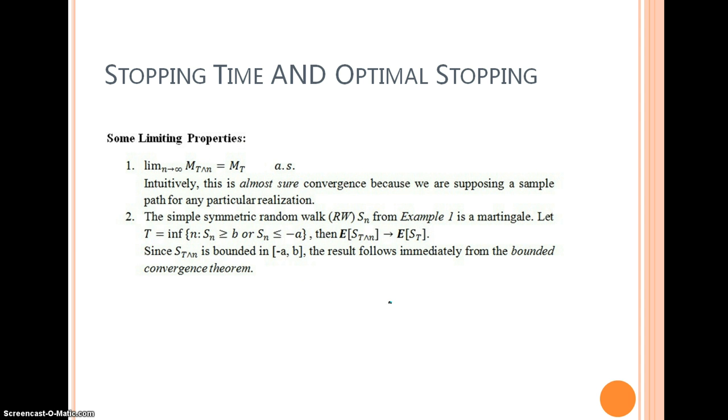Finally, I want to present some limiting properties. For the first one, this is an almost sure convergence because we are supposing a sample path for a particular realization. This kind of sample path usually leads to almost sure convergence.